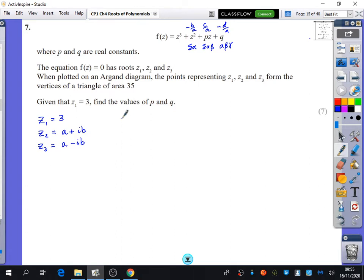So I know that the sum of the roots, z1 plus z2 plus z3, is equal to minus b over a, which is just minus 1 over 1. And when I add these roots together, I get 3 plus a plus ib plus a minus ib equals minus 1. Luckily, we get that ib is cancelling. So we just have 3 plus 2a equals minus 1. 2a equals minus 4. And a is minus 2.